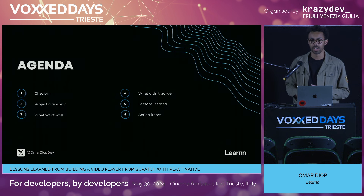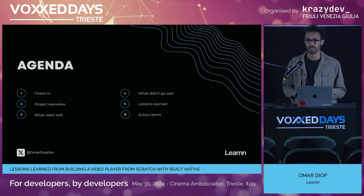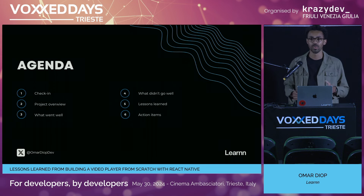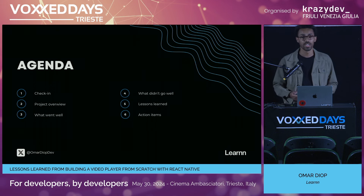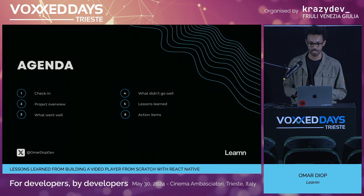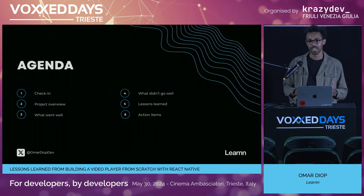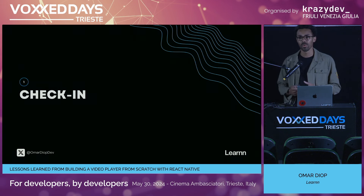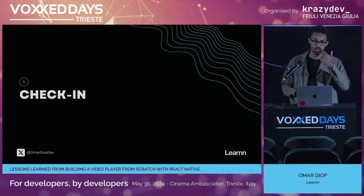Here's what we'll cover today: we'll do a brief check-in, then move on to a project overview to align everyone on the topic. Then we'll look at what went well, followed by what didn't go well — which is the most interesting part in my opinion. After that, we'll state some lessons learned, and every good retrospective ends with action items — concrete things we can do to improve our work and the project.